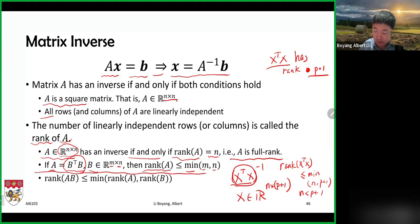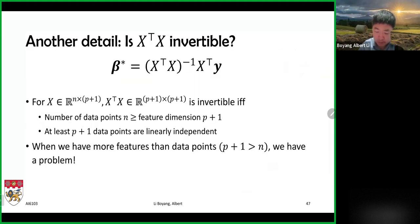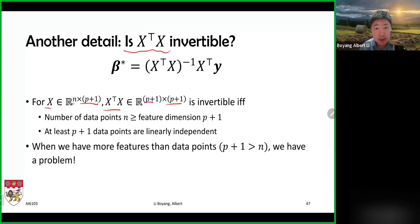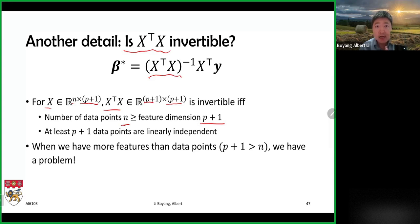In certain situations we won't have the inverse. For X-transpose X to be invertible, since X is n by (p+1), the number of data points n must be greater than or equal to p-plus-one. If you have too few data points, you have a problem. Also, at least p-plus-one data points must be linearly independent — these are necessary and sufficient conditions for invertibility.